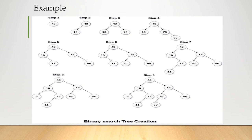Step 4: insert 90 — it is greater than root node, and again it is greater than 79, so it is placed at the right side of 79. Step 5: insert 12; as this is smaller than 43, it is placed in the left subtree, and it is greater than 10.